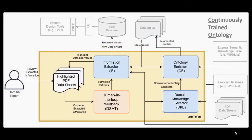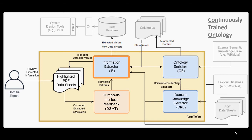Therefore, we developed CONTRON, a continuously trained ontology system that extracts information from datasheets and improves ontologies with an external semantic knowledge base such as Wikidata. The enriched ontologies are then used by the information extractor as a list of properties to search for in datasheets, and the detected properties along with their corresponding values are extracted. However, the accuracy and coverage of the detected property-value pairs are not yet satisfactory, so we need a human in the loop to provide feedback to the system. The information extractor should also learn from human corrections in order to further improve the process.